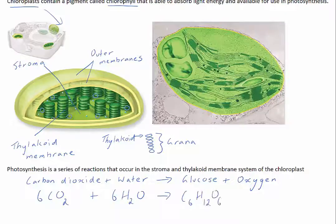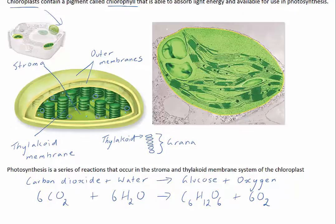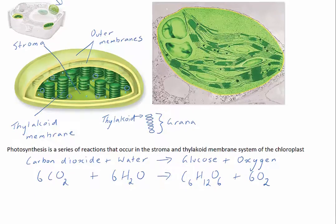Chloroplasts have their own genetic material. They have both DNA and ribonucleic acid — RNA for short — and ribosomes that are similar to those of prokaryotes, reflecting their evolutionary link with prokaryotes.